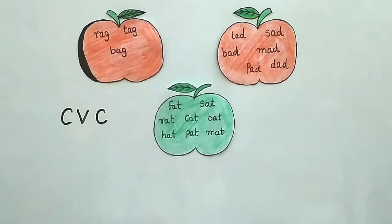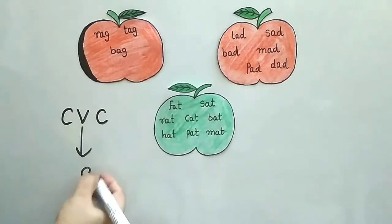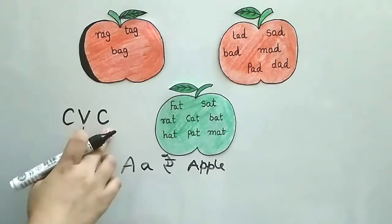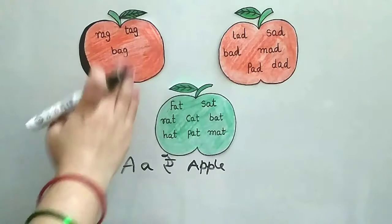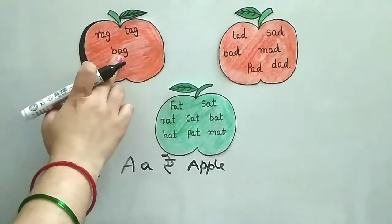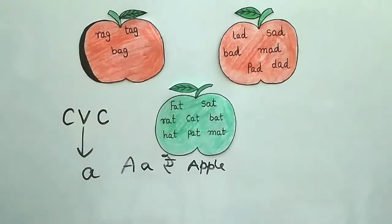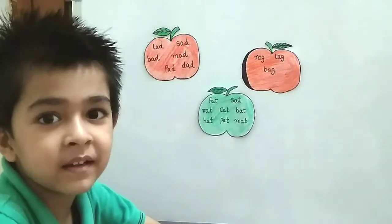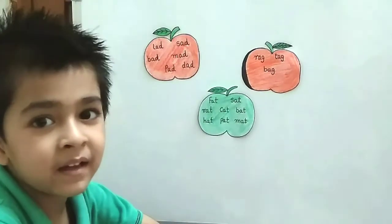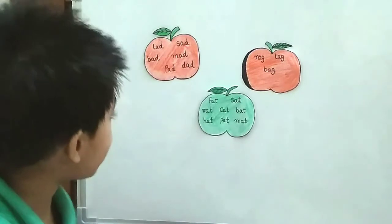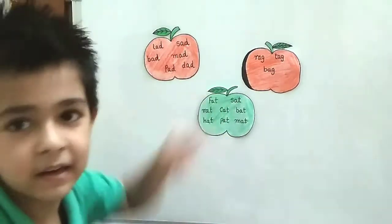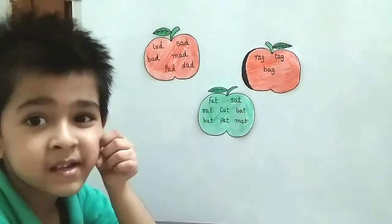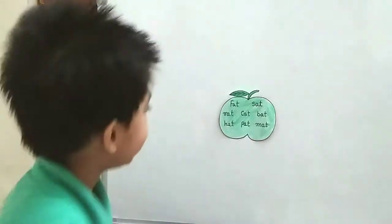Here we take A as a vowel. So friends, I have written some CVC words on the apples having A as a vowel, and we will read them one by one. I will tell the kid which apple you want, okay? First you have to read the words written on that apple, then you can take it.